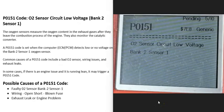Today I'm talking about a P0151 code — what it is and how you could go about fixing it. A P0151 code is an O2 sensor circuit low voltage, bank 2 sensor 1.